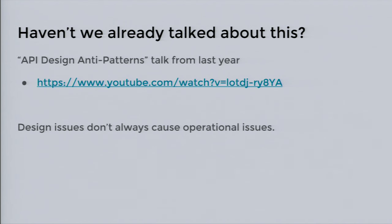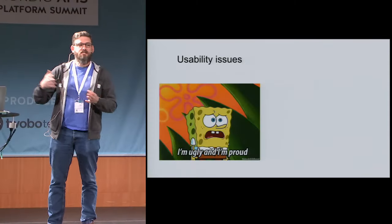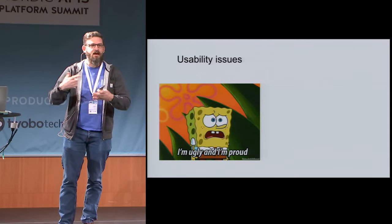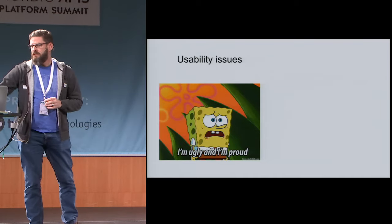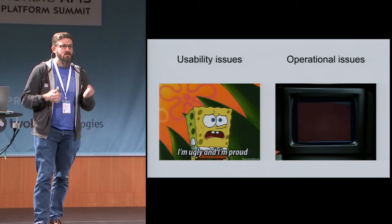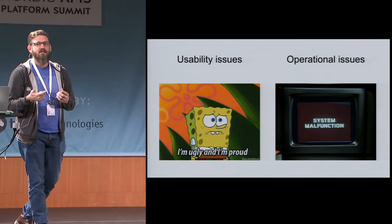The difference between what I've talked about before — anti-patterns in API design — versus what we'll talk about today: usability issues are what I usually cover, things that confuse people when they try to use your API, or design scale issues where if you design it a certain way you'll get stuck and can't add on in the future. But what we're talking about today is operational issues — things that actually break your system when it goes live if you design it a certain way.